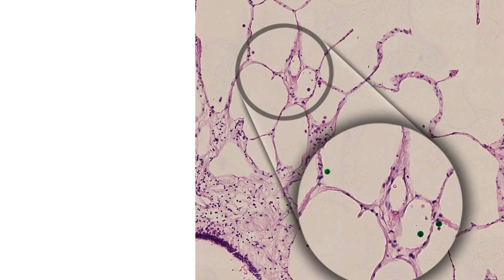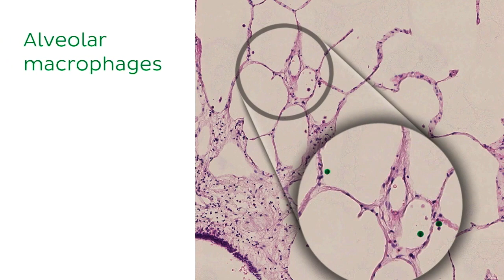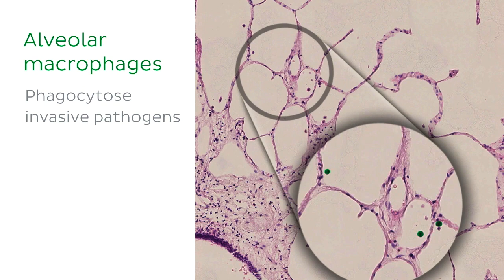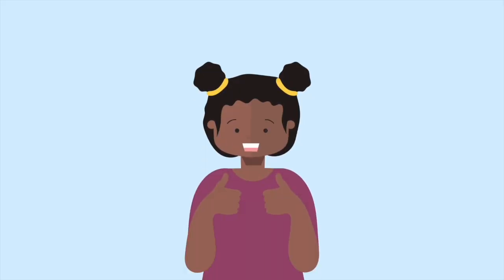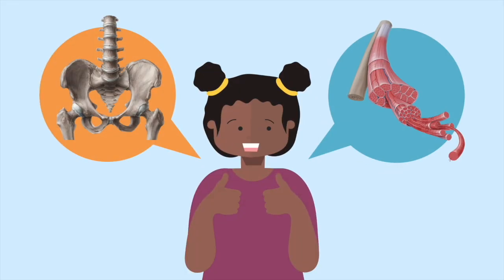The third cell type found in alveoli are the alveolar macrophages. These macrophages are the same as other macrophages, just located in the alveoli. They patrol the area, looking for any invasive bacteria, toxic particles, or other foreign bodies to phagocytose and get rid of. Alveolar macrophages are an important line of defence in preventing infection of the lungs.